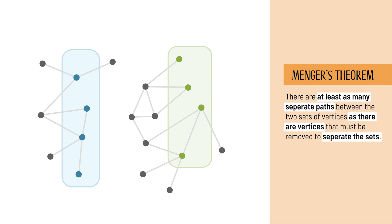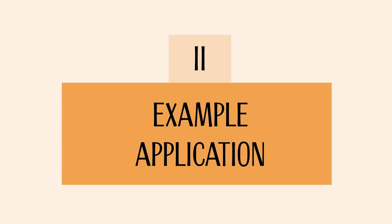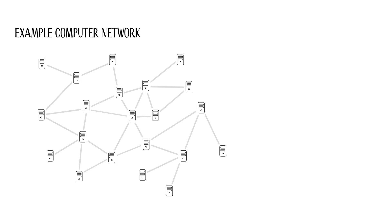To establish a practical connection to graphs and to motivate Menger's theorem, we want to introduce a real-life example: a simplified computer network represented as a graph. The vertices are computers and the edges between vertices are the cables between the computers.